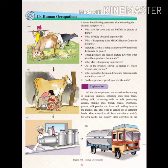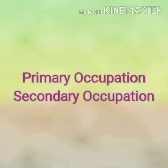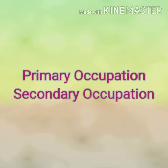We have studied in the previous video that there are different types of human occupations. Human beings engage themselves in various kinds of activities to fulfill their daily needs. These activities are called occupations. Human occupations are divided into four categories. The first category is primary occupation and secondary occupation, which we have already covered in the previous video.